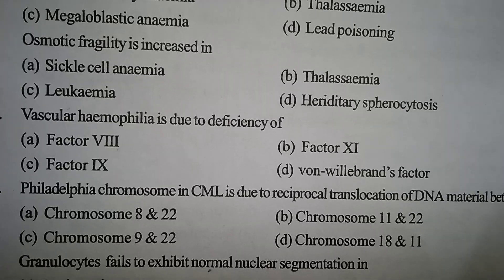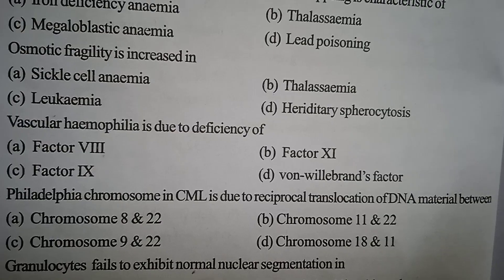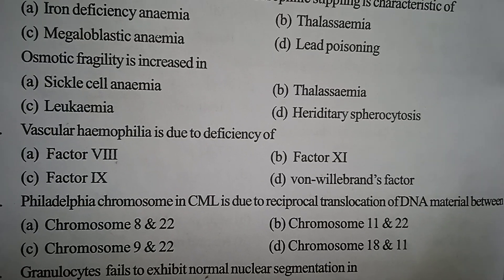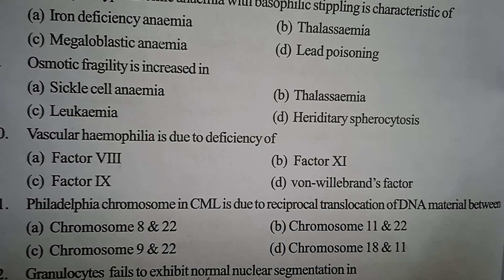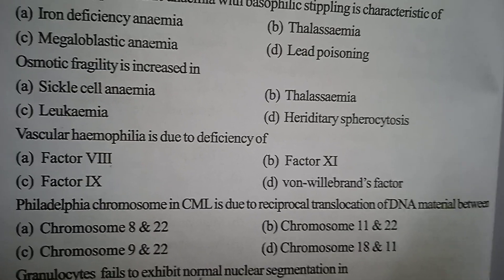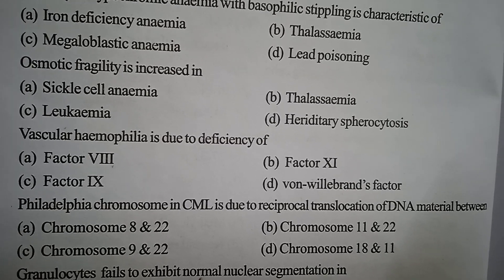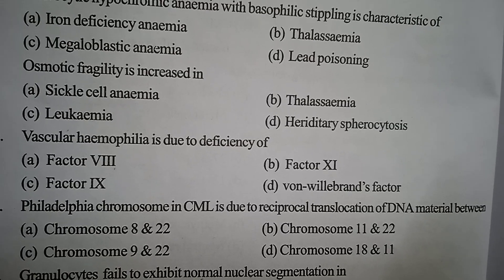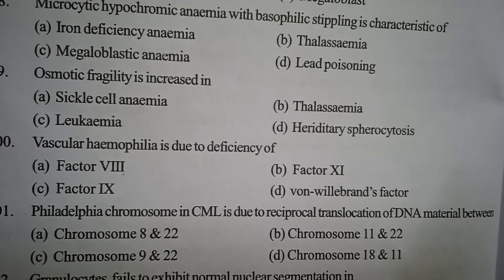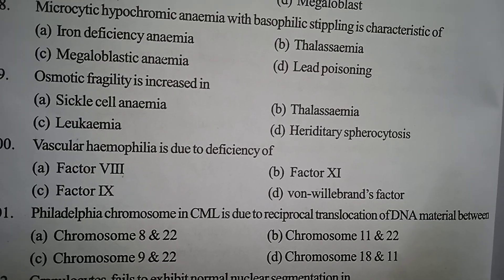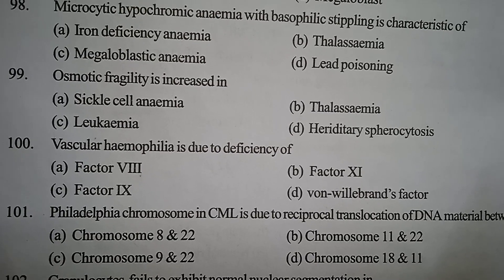Next one: the Philadelphia chromosome in CML is due to reciprocal translocation of DNA material between — Option A: chromosome 8 and 22. Option B: chromosome 11 and 22. Option C: chromosome 9 and 22. Option D: chromosome 18 and 11. Correct answer: Option C, chromosome 9 and 22.